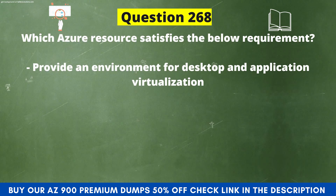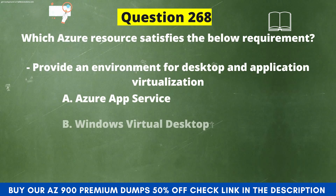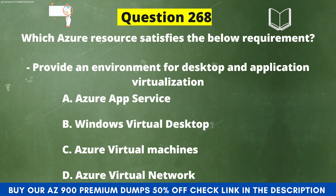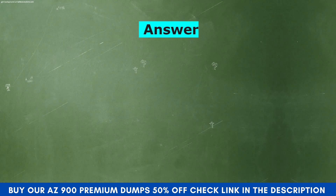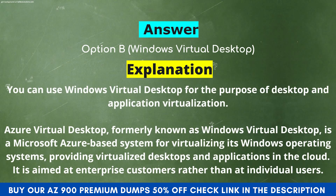Which Azure resource satisfies the below requirement: provide an environment for desktop and application virtualization? Option A, Azure App Service. Option B, Windows Virtual Desktop. Option C, Azure Virtual Machines. Option D, Azure Virtual Network. And the correct answer is Option B, Windows Virtual Desktop. You can use Windows Virtual Desktop for desktop and application virtualization. Azure Virtual Desktop, formerly known as Windows Virtual Desktop, is a Microsoft Azure system for virtualizing Windows operating systems, providing virtualized desktops and applications in the cloud.